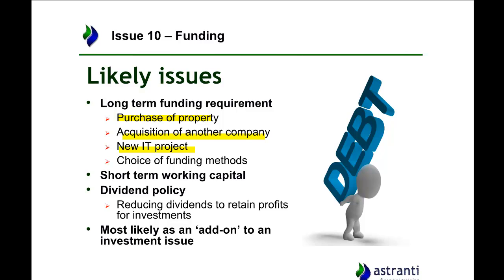It would also help them allocate rooms based on the length of time people stay. The average business customer stays for two nights, the average visitor for three nights, and the average holiday maker for between seven and fourteen nights. So if there's a one or two day gap, we can't allocate the room to anyone, or only to a business customer. We may also be asked a question on funding methods — debt versus equity.